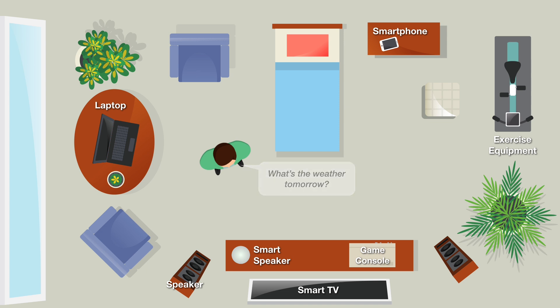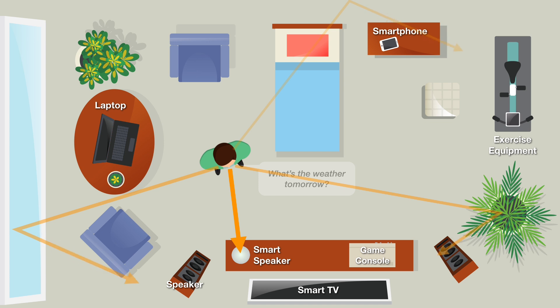Our approach relies on two fundamental properties. First, built environments introduce characteristic multipath effects. When a user speaks towards a device, the first, loudest, and least distorted signal to arrive is the original sound, which took a direct path. All other sounds, which have echoed and scattered off of various surfaces in the environment, are delayed, quieter, and more distorted.